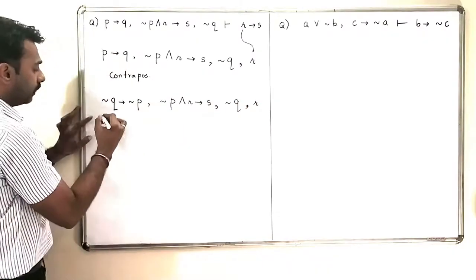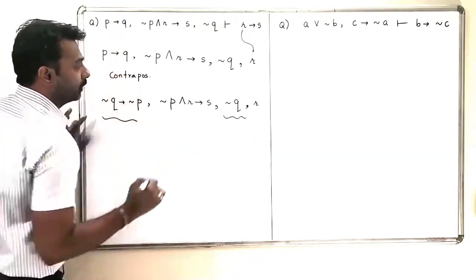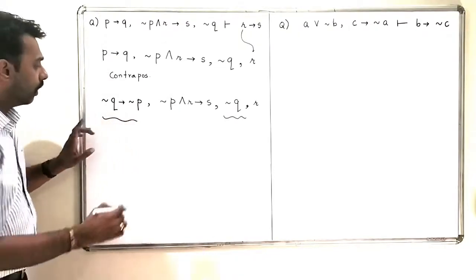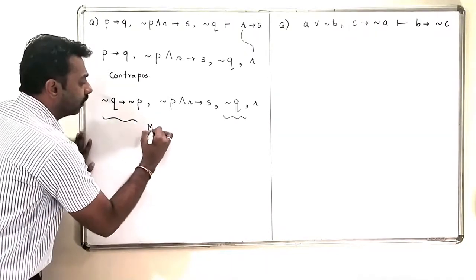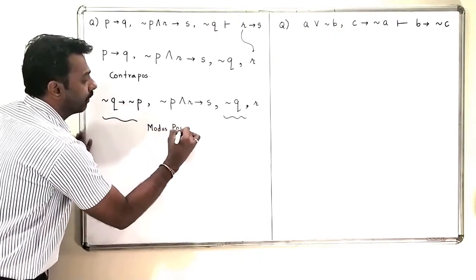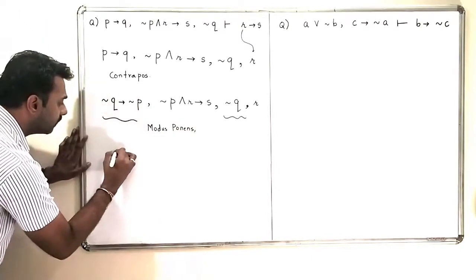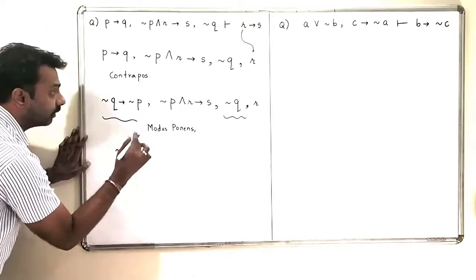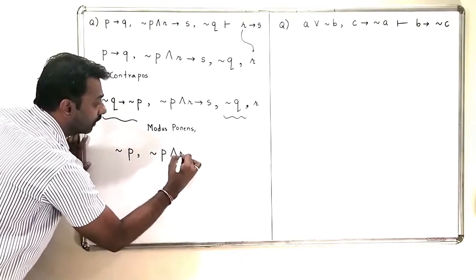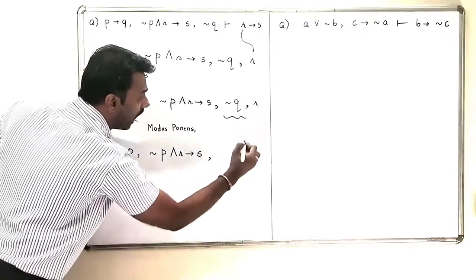Now, if I look at these two quantities, this is negation Q with negation Q implies negation P. So, I am going to use here modus ponens and the output of modus ponens is negation P. Others will remain as it is. Negation P and R implies S with R.